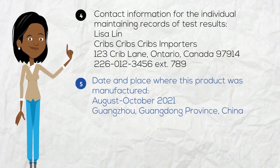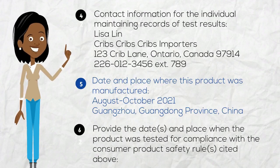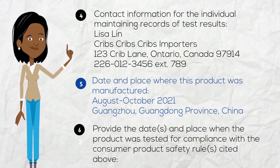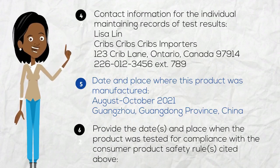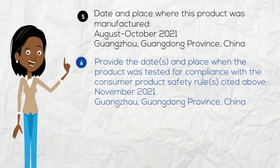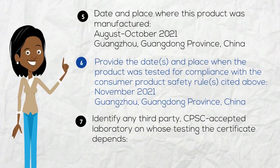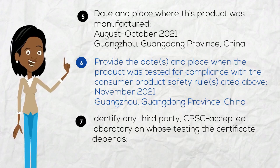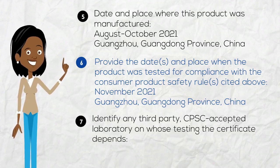August to October 2021 is when the cribs were manufactured. Notice I don't need to have one specific month, and I can have a range of dates here. I also put down the city, province, and country of where the cribs were manufactured. In this section, I need to include the date and place the cribs were tested. I included the month and year, as well as the city, province, and country of the CPC-accepted third-party laboratory.